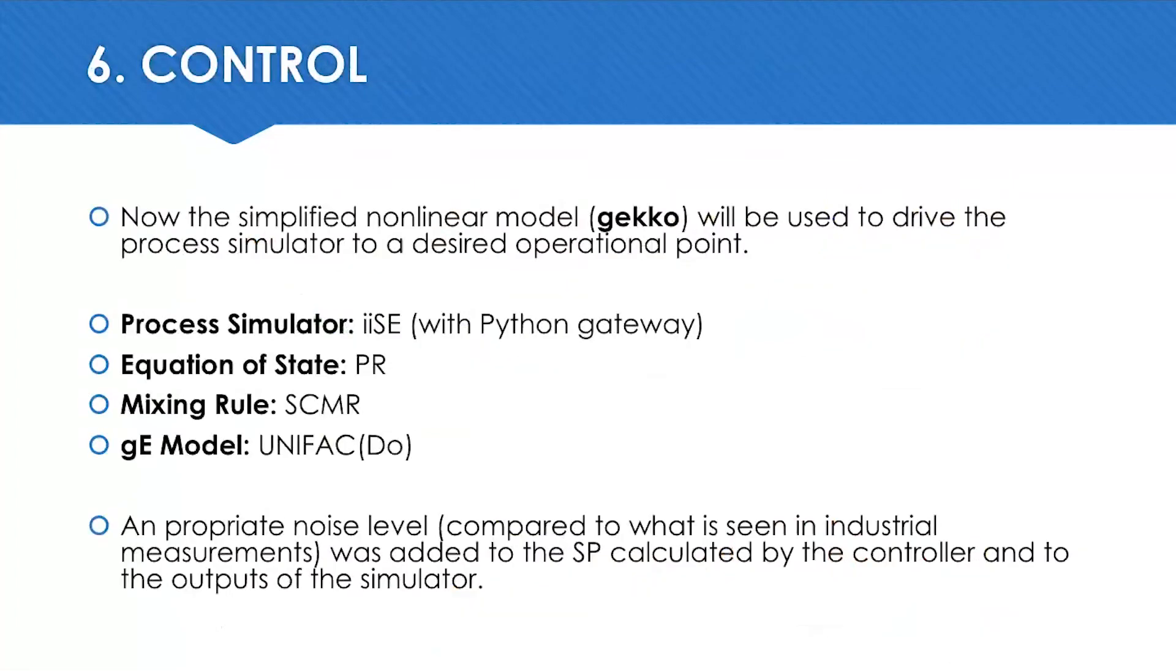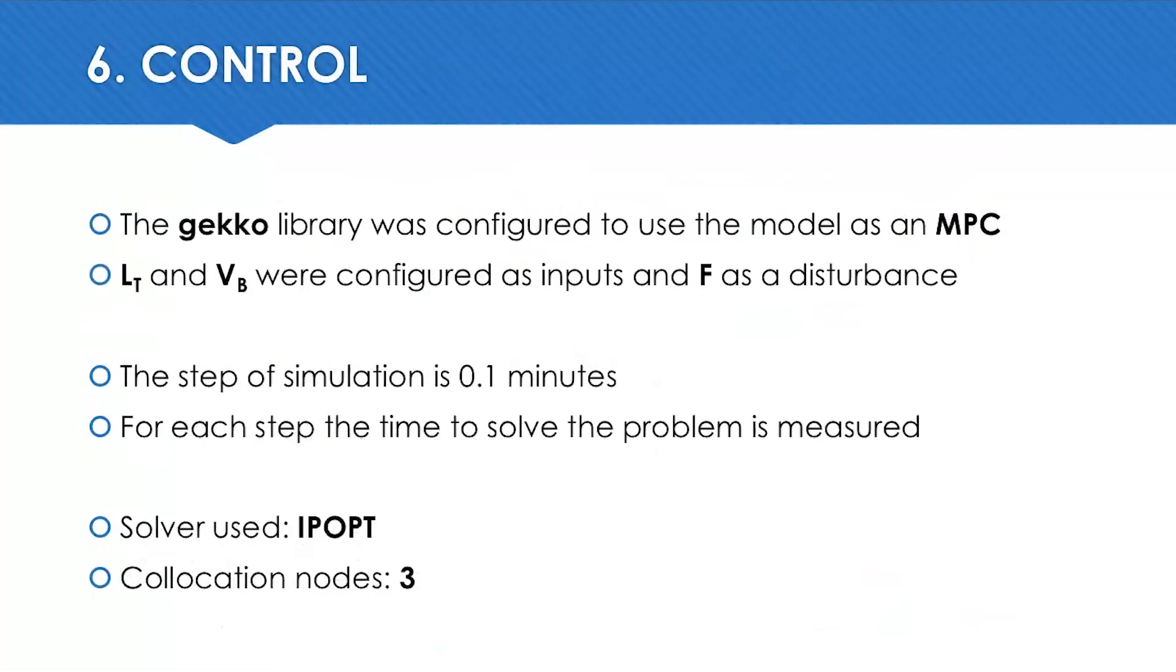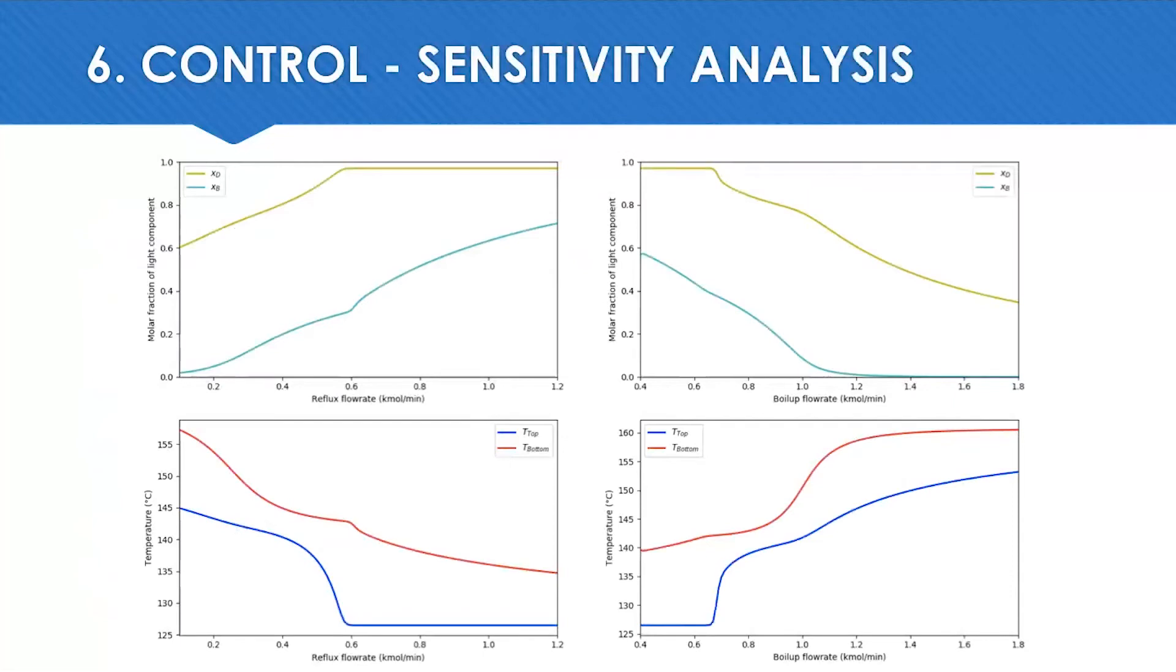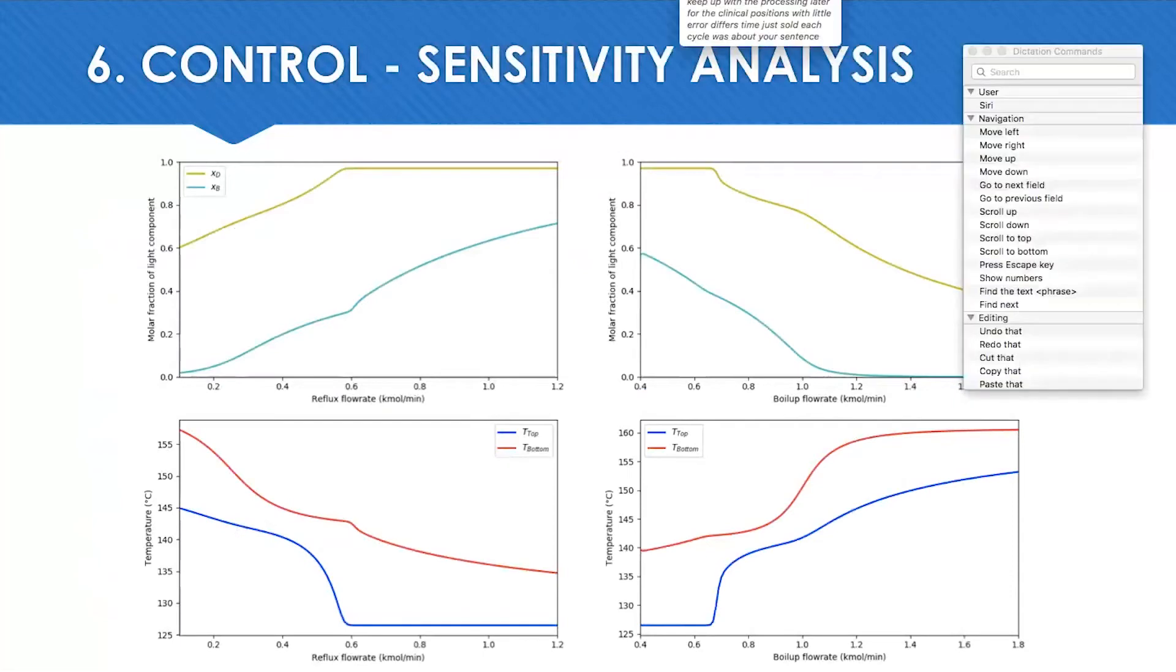And finally we get to the control part. Now the idea is to use the simplified nonlinear model developed in Gekko to drive the process simulator to a desired state. We keep the same configuration in the process simulator and maintain the noise level. We configure the Gekko application to work as an MPC. The reflux and boil-up are the manipulated variables, and the cycles are configured like before, the same way.